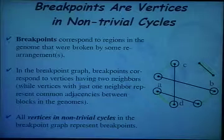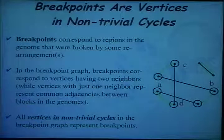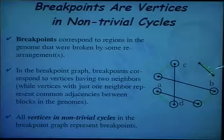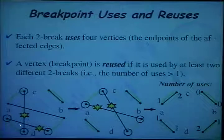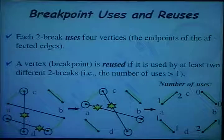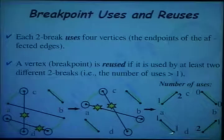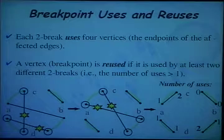The vertices forming non-trivial cycles in the breakpoint graph correspond to what are called breakpoints, while vertices present in trivial cycles — formed by just parallel edges — represent common adjacencies in the genomes. In a particular transformation, we can count how many times each vertex is used by rearrangements. For example, in this scenario, some vertices are used once, some twice, and some zero times — giving a count of breakpoint reuses.